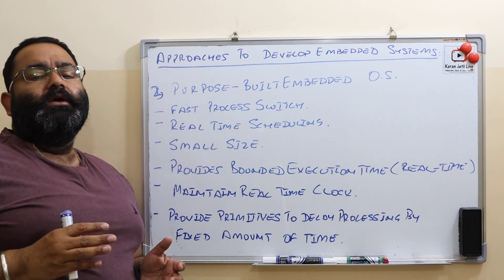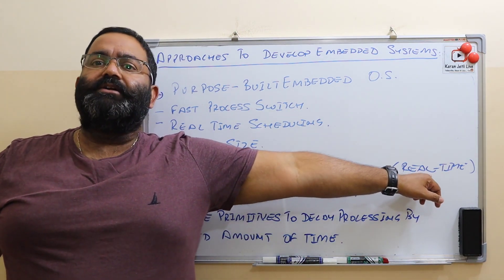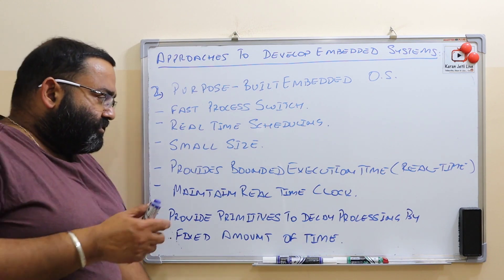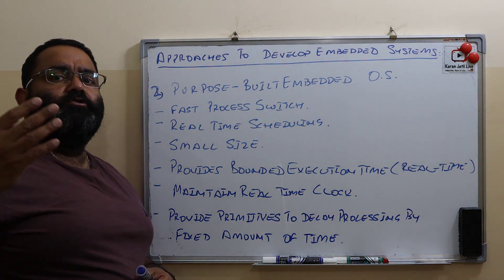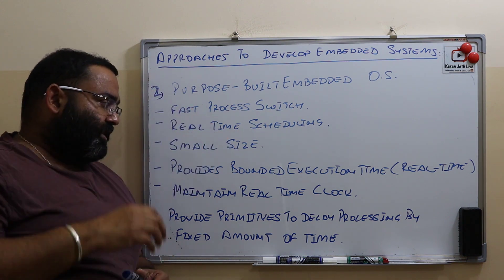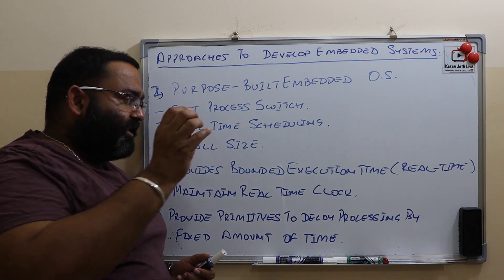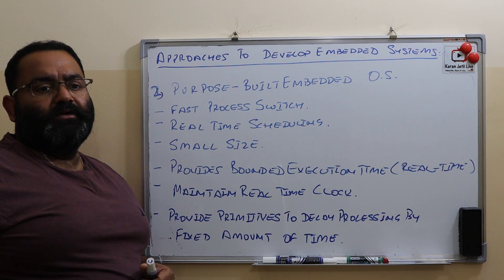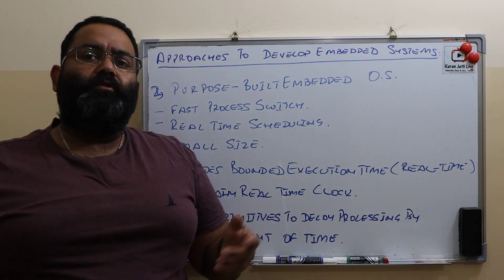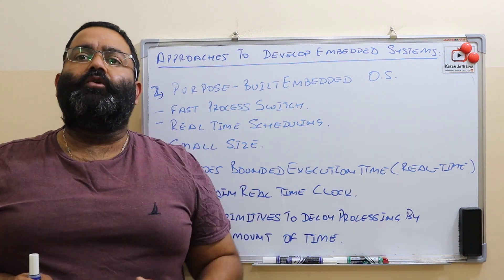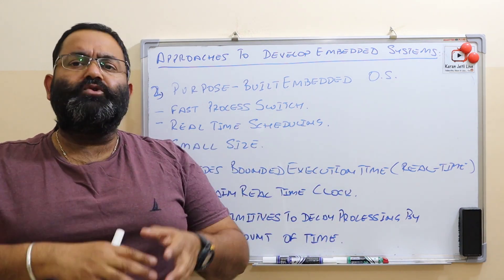Purpose-built embedded systems provide bounded execution time - the system must give results within a fixed period of time, which we also call real-time operation. They can maintain a real-time clock to ensure output is generated in real time. They also provide primitives using which we can delay processing by a fixed amount of time. For example, in your washing machine if you set a timer, the machine will start washing your clothes after 24 hours - we are delaying the operation for a fixed amount of time. All these features come in the purpose-built embedded operating system.